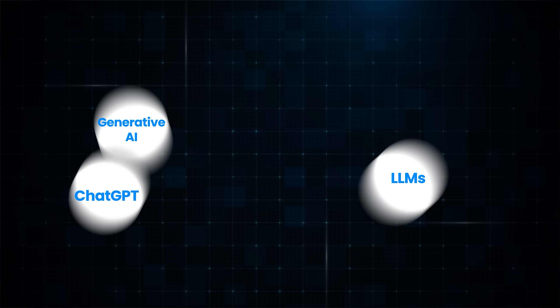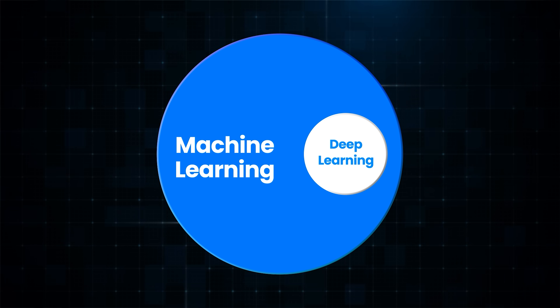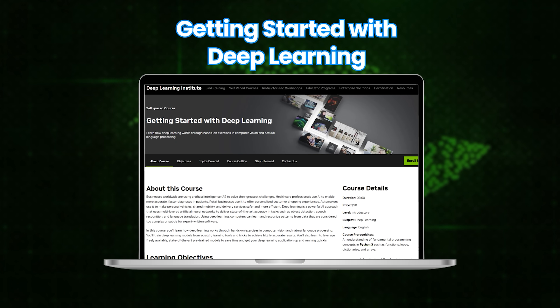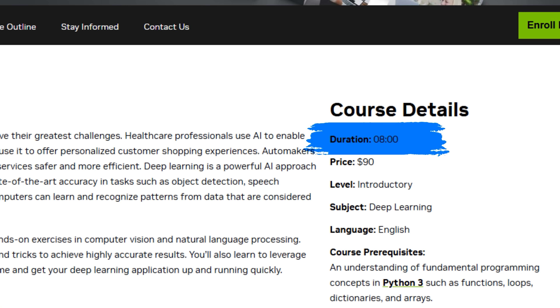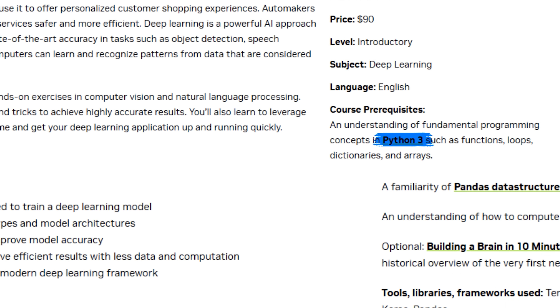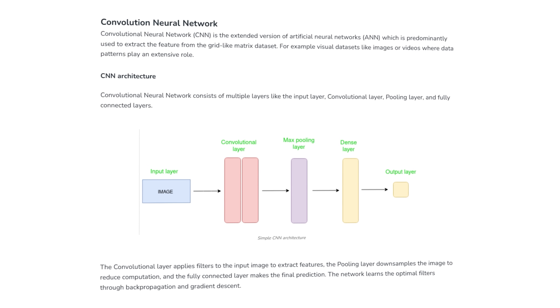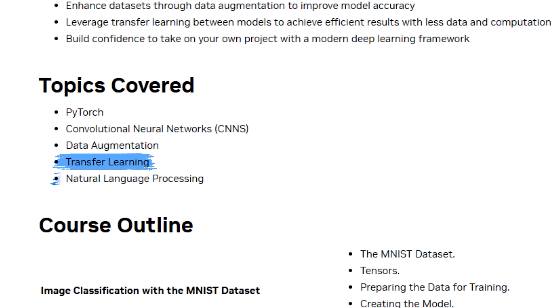We have talked a lot about Generative AI, LLMs, and ChatGPT — all of these are applications of Deep Learning. Deep Learning is a subset of machine learning where we use artificial neural networks to learn from large amounts of data. You can get started with Deep Learning through NVIDIA's hands-on course. Unlike the previous courses which are less than 3 hours and more high-level, this course goes deeper and requires knowledge of Python. It teaches PyTorch, a popular deep learning library, as well as Convolutional Neural Networks (CNNs), which are effective for processing grid-like data like images. It also covers transfer learning and natural language processing.